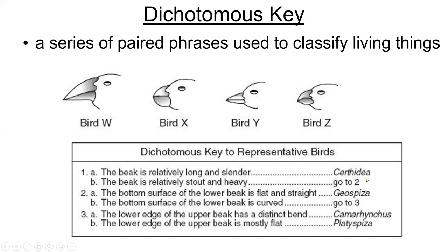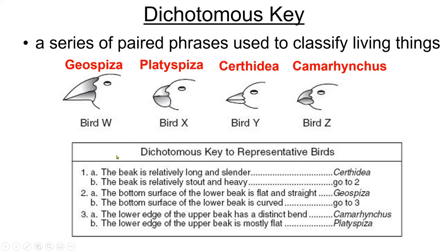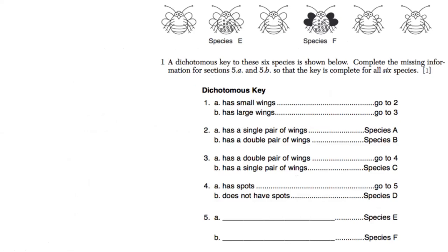Still looking at bird W, statement two says the bottom surface of the lower beak is flat and straight. If that's the case, then your answer is that this bird is Geospiza. But if the bottom surface of the lower beak is curved, then you'd have to move on to the next statement, which is statement three. So you just decide which bird you want to identify and you work through these statements until you end up getting your answers.